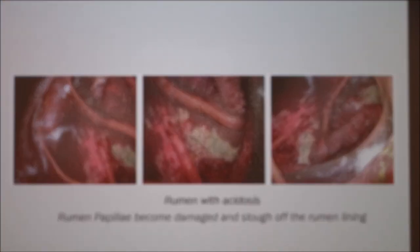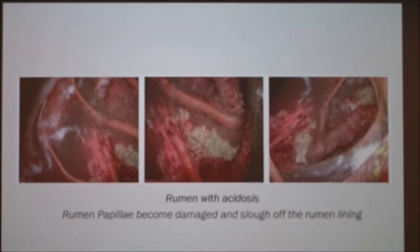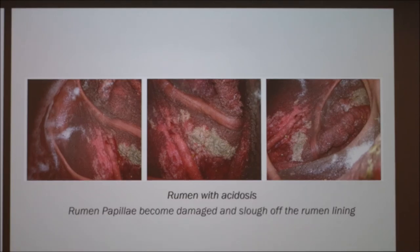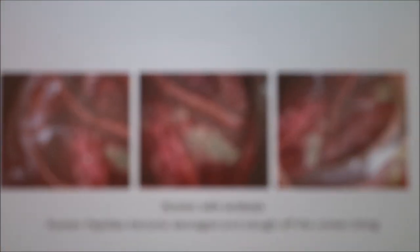Here is a rumen with acidosis in a calf. As you can see, the brown areas are the healthy normal papillae. But once the acid level gets too low, they become damaged and slough off. The pink area shown here is the rumen wall without the papillae.